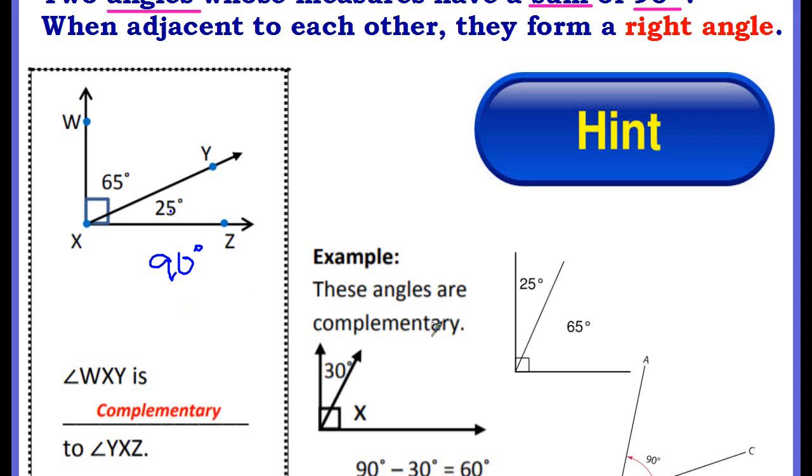Okay these are some examples of complementary angles. We have 30 degrees. We have this X. We could find X by just subtracting 30 from 90 and we would get 60 degrees because they're adjacent. They make a right angle. They have to add up to 90. Here's two more. There's another one. Hint.